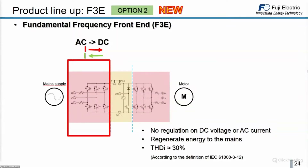Now let's move to F3, the fundamental frequency front end. This module is based on an IGBT bridge with flyback diodes. The device converts energy from AC to DC to supply the DC link capacitors of the system. The module can manage current flow from mains to motor and from motor to mains, making it a regenerative module. The input reactor that must be installed results in a THDi of around 30% in both motoring and regeneration mode.